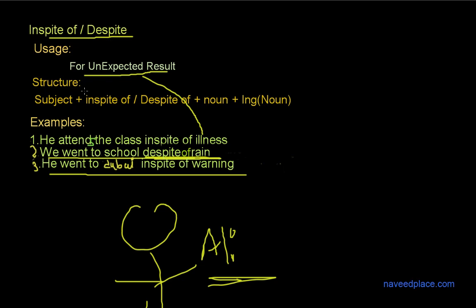Now let's see the structure of 'in spite of' or 'despite.' The structure begins with a subject — the doer. It can be me, you, my friend, anyone. Then we use either 'in spite of,' 'despite of,' or simply 'despite.'